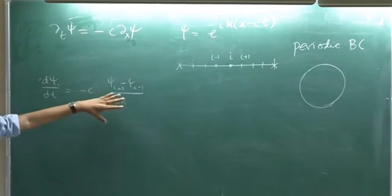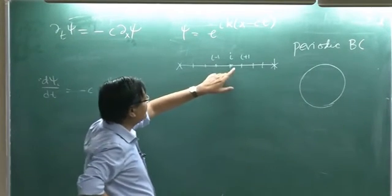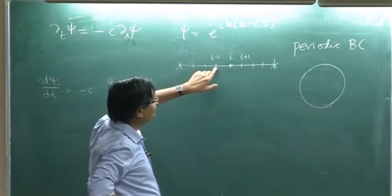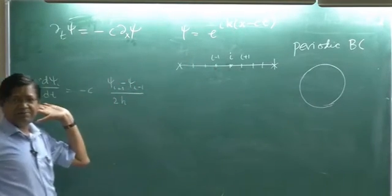This is central difference. So, derivative at this point psi i is psi i plus 1 minus psi i minus 1 by 2h. Happy?